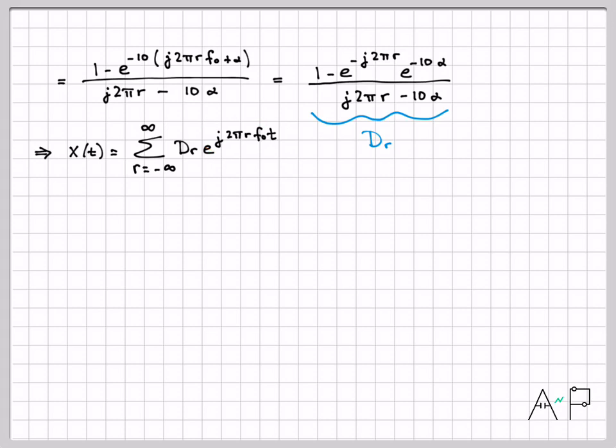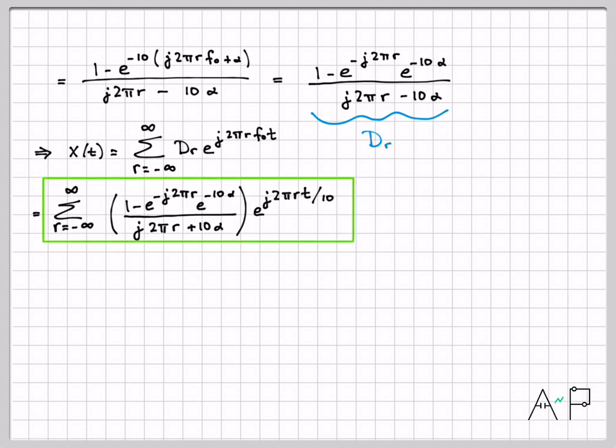The whole point of the math we just did was to figure out what is this sequence of numbers, Dr, and now we know exactly what that is. So I can go ahead and plug in that x(t) is equal to, here's our expression for the Drs, times e to the minus j 2 pi r t over 10. So I went ahead and replaced the f naught with 1 over 10, the value that it's equal to in this particular problem, because I'm trying to find the expansion on the interval from 0 to 10. So that's my final answer. That is the Fourier series representation that we were looking for.